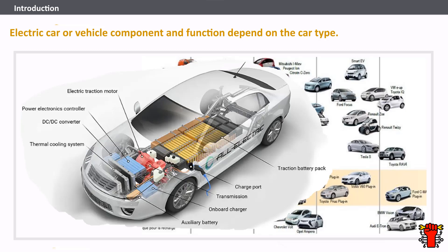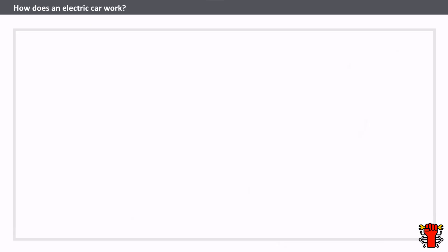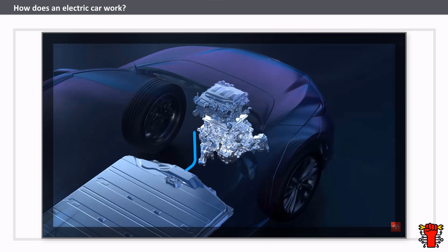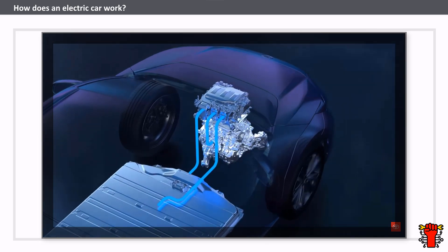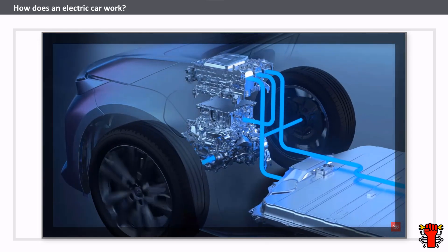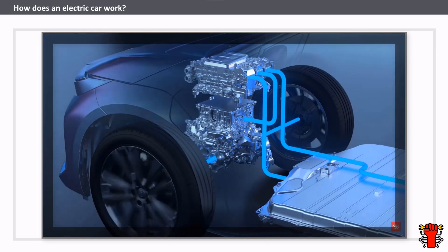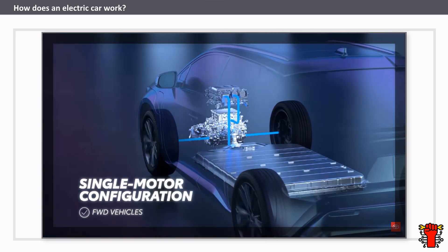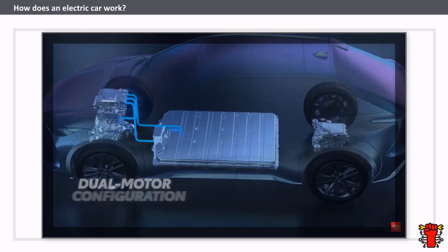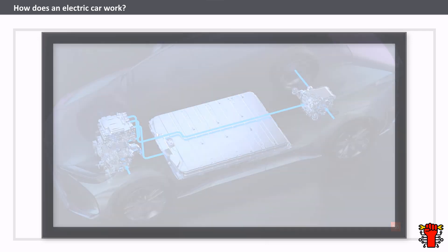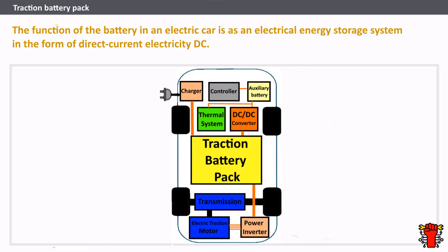The different types of electric car components determine how the car works. When the car pedal is pressed, the controller takes and regulates electrical energy from batteries and inverters. With the controller set, the inverter then sends a certain amount of electrical energy to the motor. The electric motor converts electrical energy into mechanical energy — rotation of the motor rotor rotates the transmission so the wheels turn and the car moves.